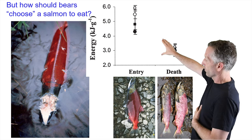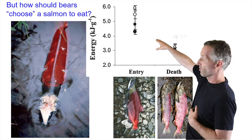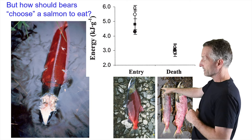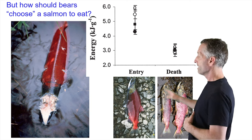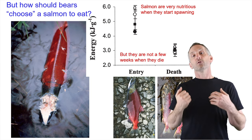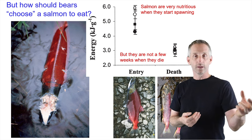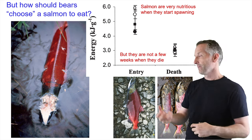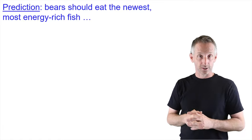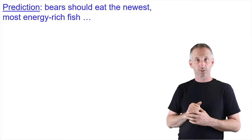When fish just get into the creek, they look like this nice fresh male with lots of energy — a very high energy density. But three weeks later when they're dead, they have only about half the energy they had when they started. So all else being equal, it's much better for a bear to kill a fresh, newly arrived, energy-rich salmon than one that's been there a long time. The prediction is that bears should eat the newest, most energy-rich salmon.